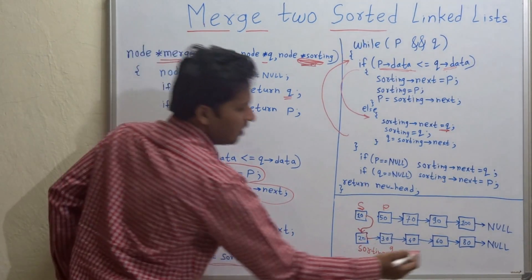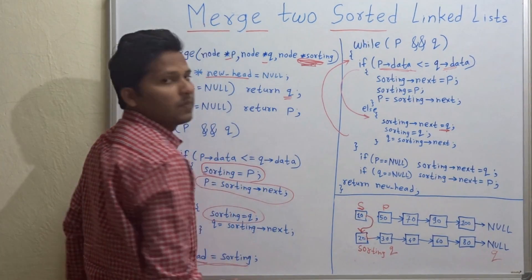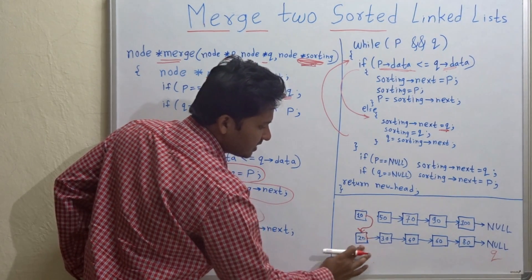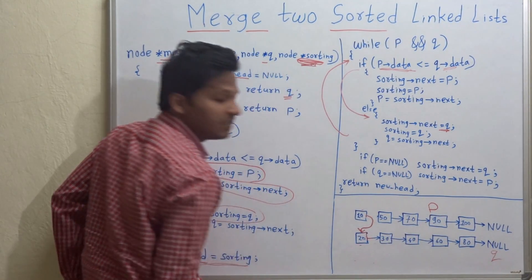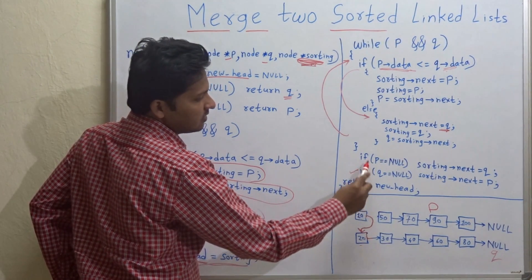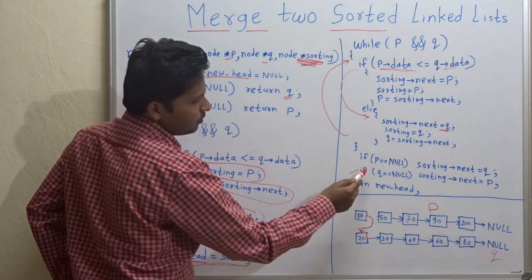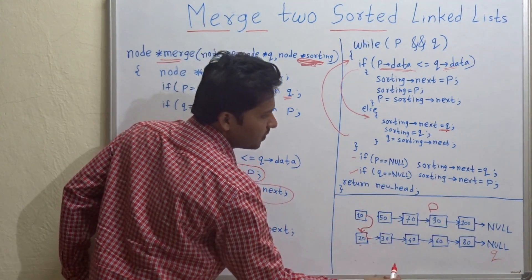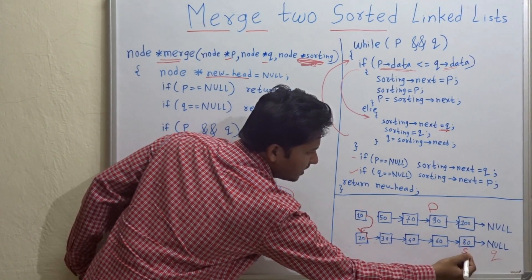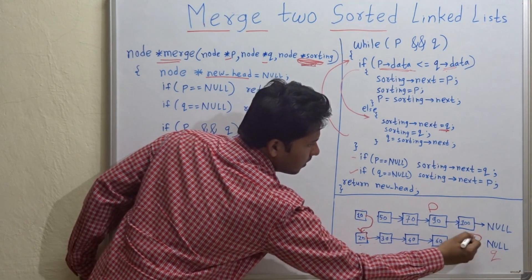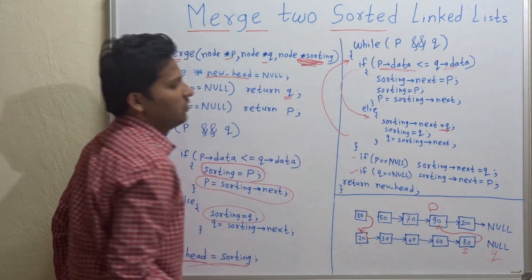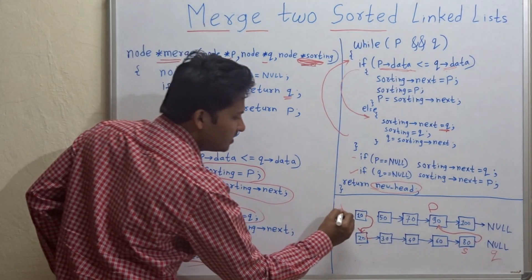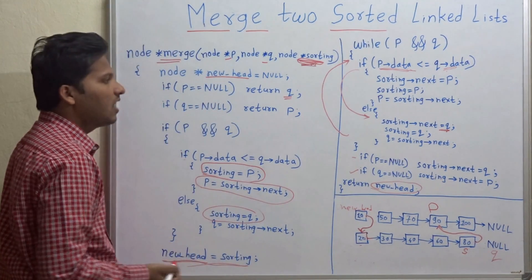At the end, when Q reaches null first — as in our example, when Q reached null and P was pointing to the remaining node — the condition is: if Q equals null, sorting's next equals P. So if sorting is pointing at the last compared node, its next will point to P and the remaining linked list will continue. At the end we return the new head pointer of the answer — the new head is 10. This is how this code works.